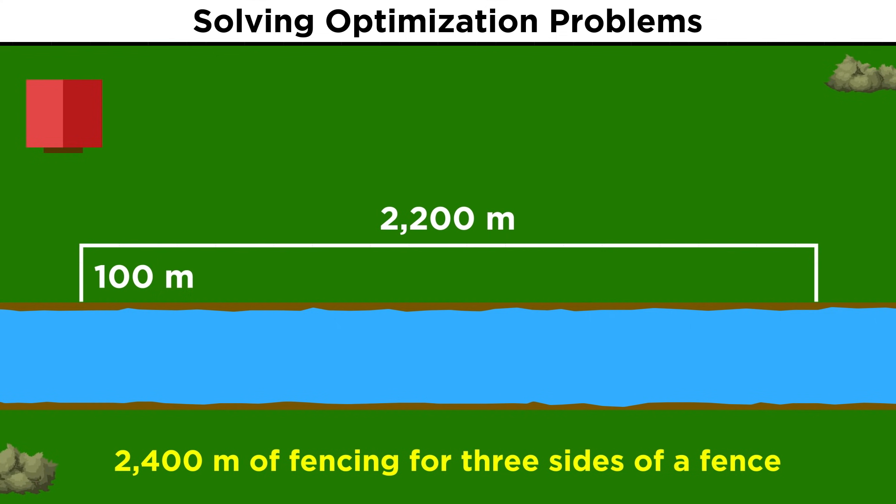Well, let's take a few guesses just for fun. Say we go one hundred meters up from the river on either side, leaving twenty-two hundred meters of fence to connect them. Calculating the area of the rectangle, that's two hundred twenty thousand square meters. We can probably do better than this.